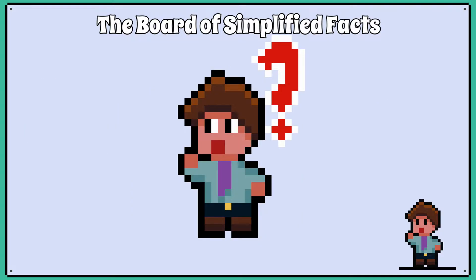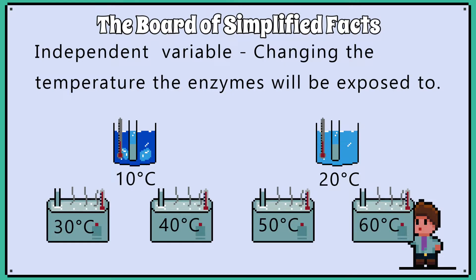It is important that whatever investigation you have in front of you, you can identify all the variables. In this investigation, we will be changing the temperature that the enzymes are exposed to. This is our independent variable.